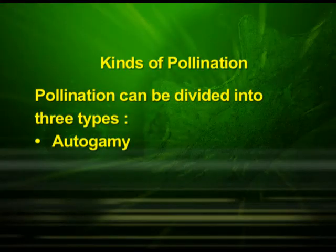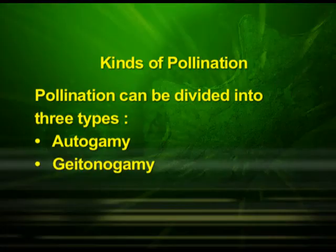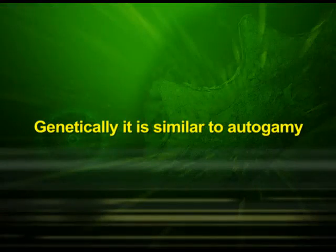Now let us see the second kind of pollination: gitonogamy. Here, transfer of pollen grains occurs from the anther to the stigma of another flower of the same plant. Although gitonogamy is functionally cross-pollination involving a pollinating agent, genetically it is similar to autogamy since the pollen grains come from the same plant.